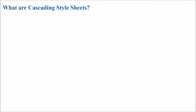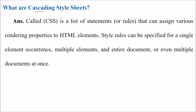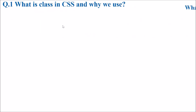What are cascading style sheets? CSS or cascading style sheets are rules — they are statements that can assign various rendering properties to your HTML elements. For example, your HTML text is by default black. Now you want to make it red, increase the size, or give it more properties. Then you would require cascading style sheets. Style rules can be specified for a single occurrence or multiple occurrences across the entire document or website.